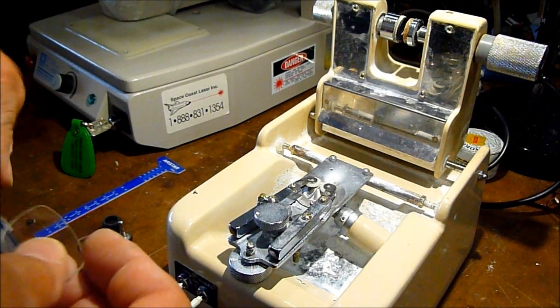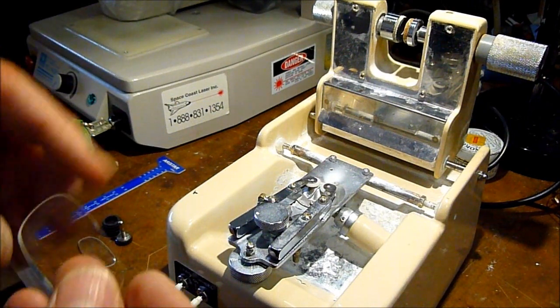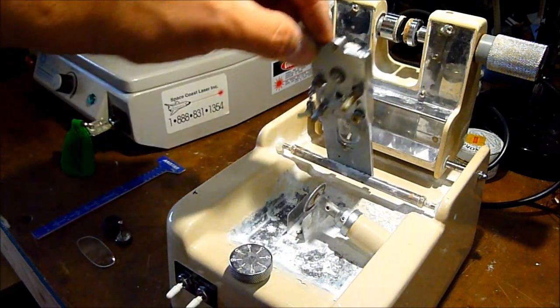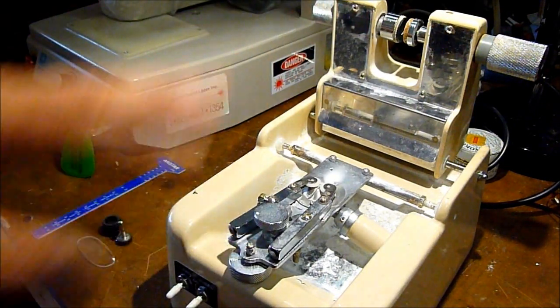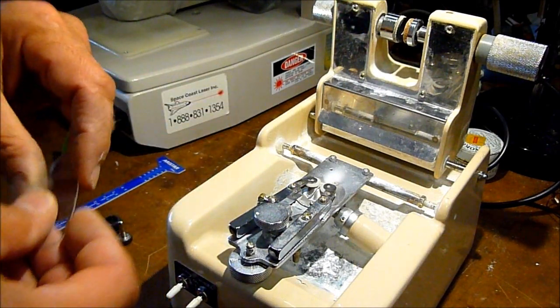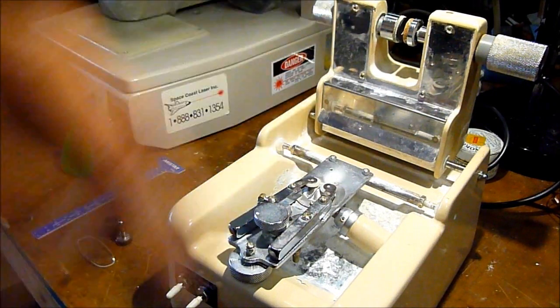Here we're going to demonstrate a modified auto groover. What we've done is this works like a regular groover, does all kinds of size lenses, but the limitations to the typical auto groover before the automated edgers came out with the grooving mode built in was that these went down to maybe 25-24mm.